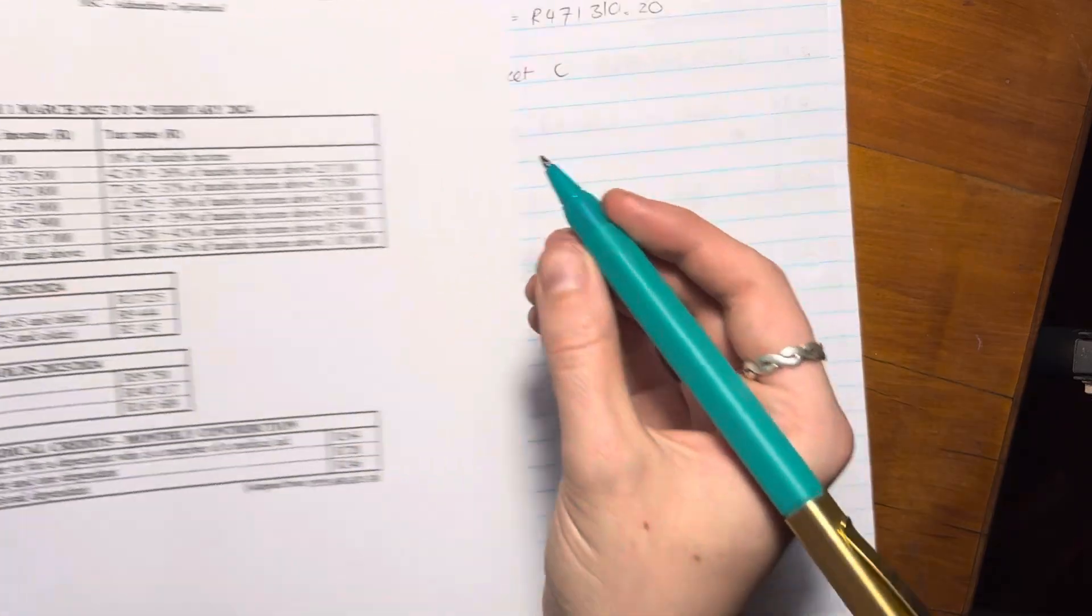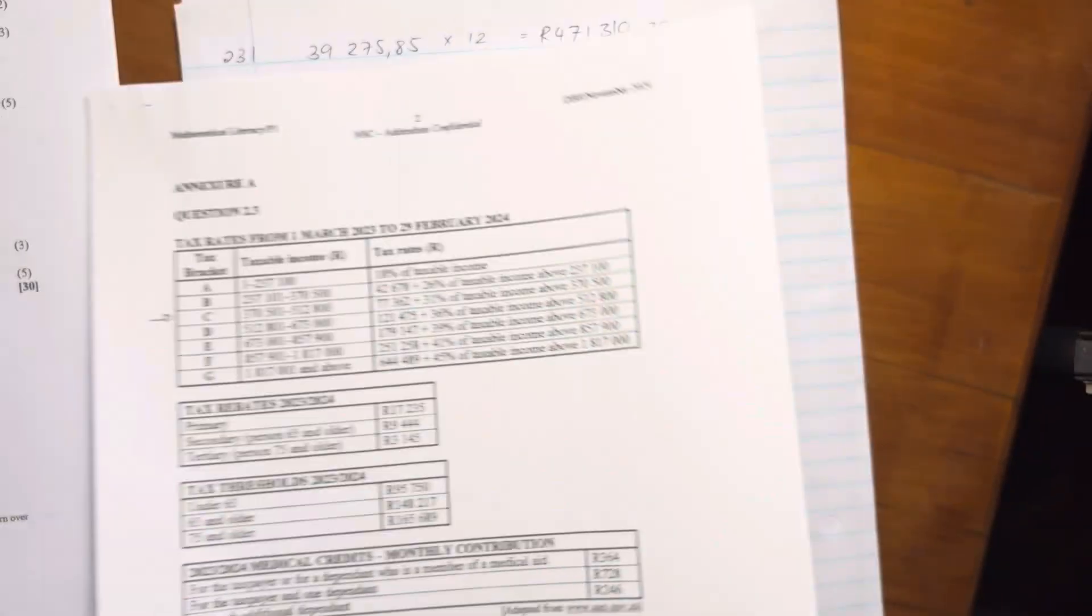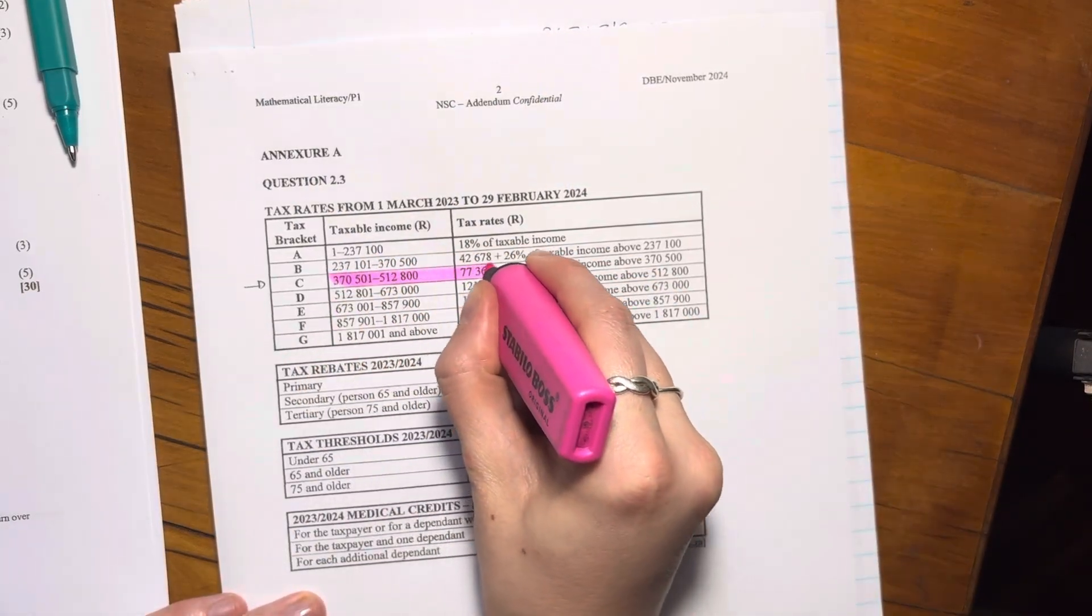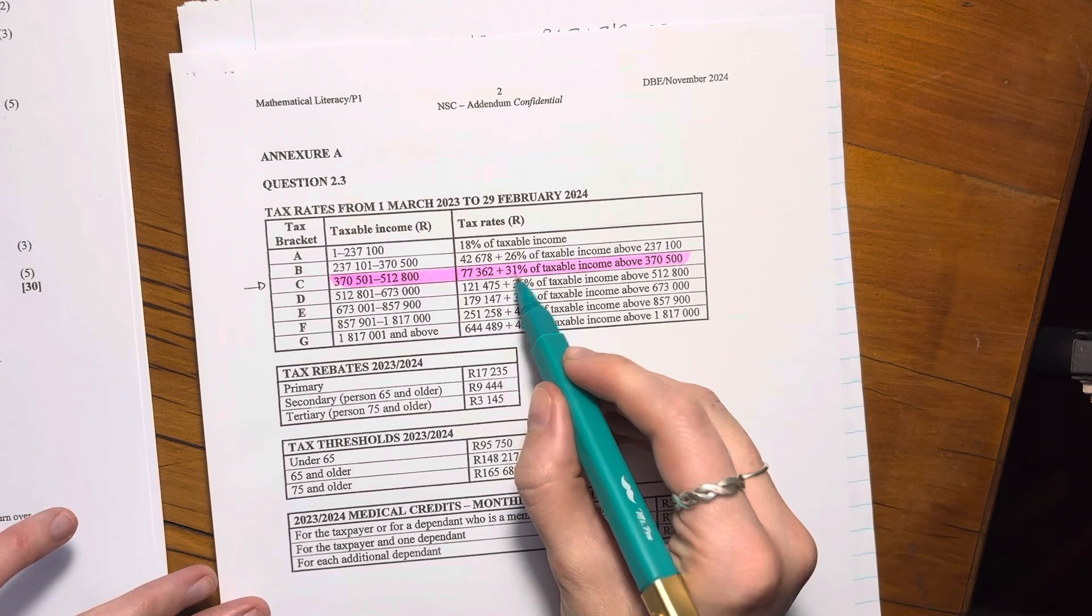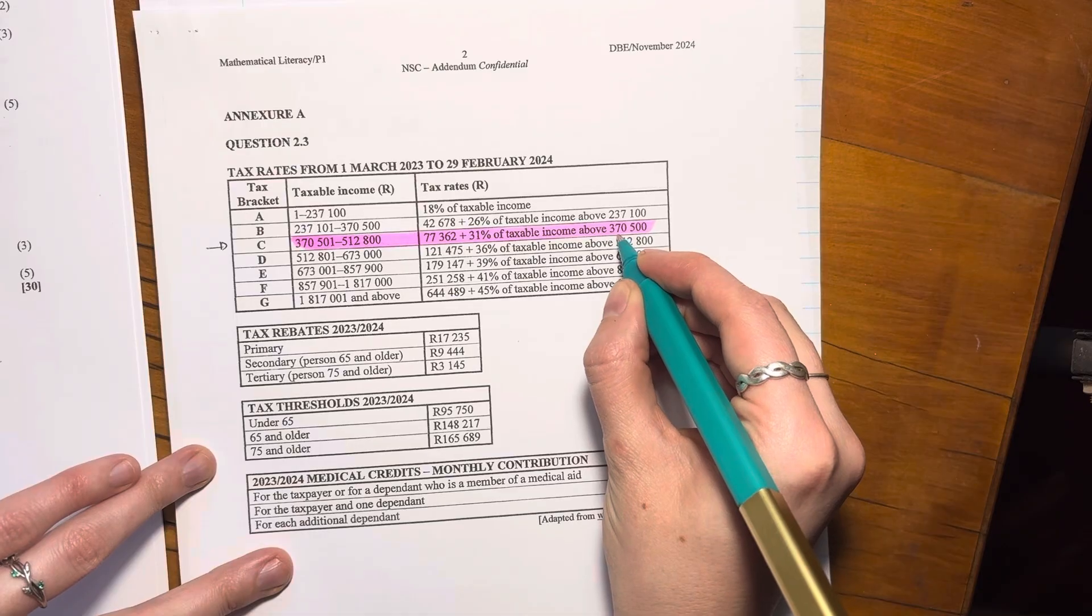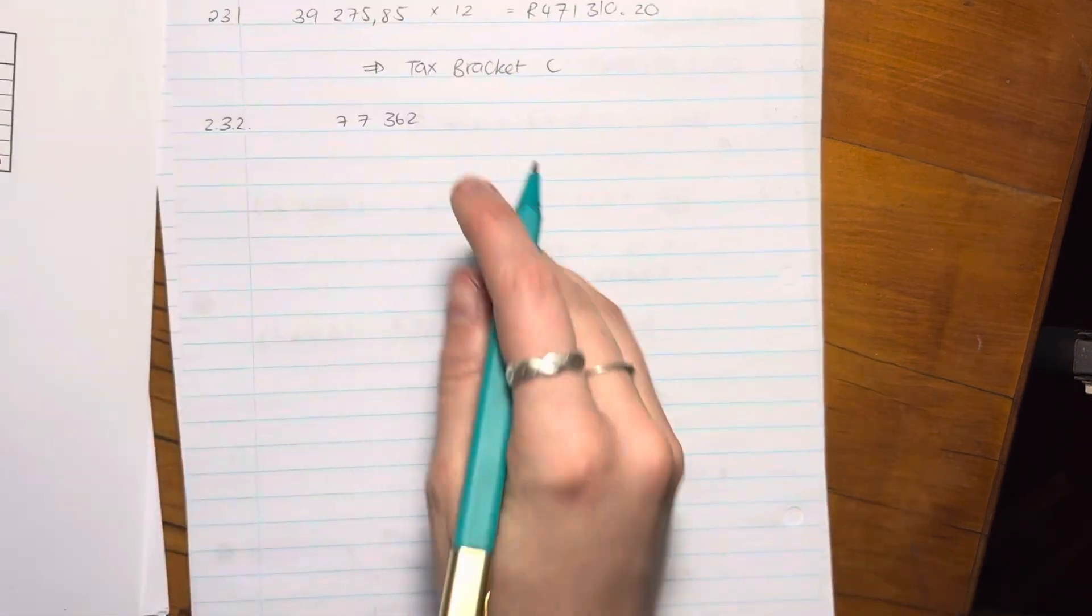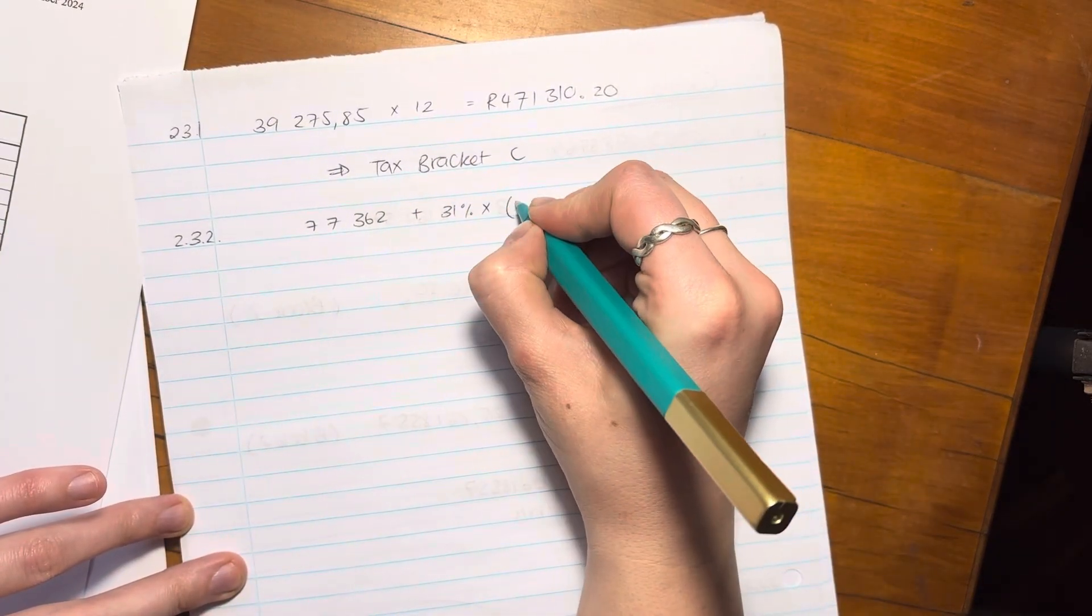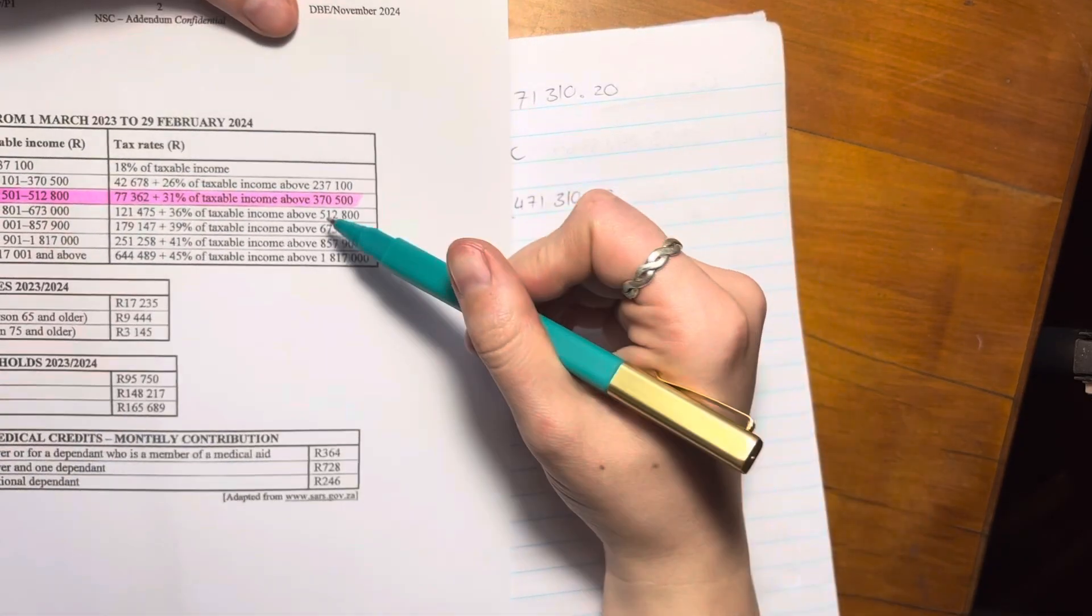So in tax bracket C, you pay 77,362. I'm just going to highlight that so that you see what I'm saying. So she pays 77,362 and then she pays 31% of taxable income above 370. So it's not 31% of everything. It's only on the amount that's above 370.